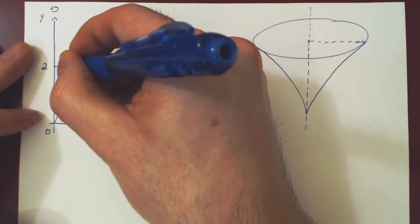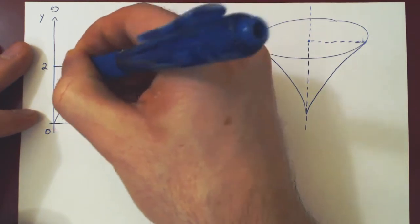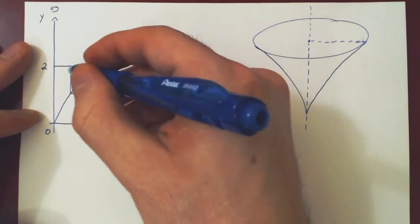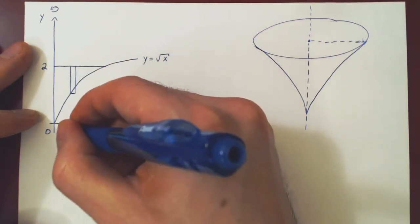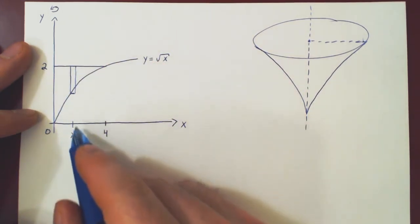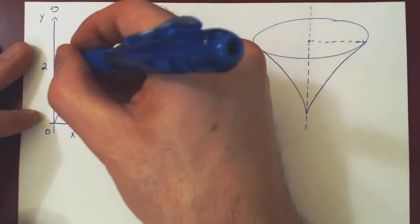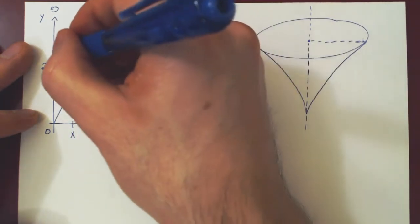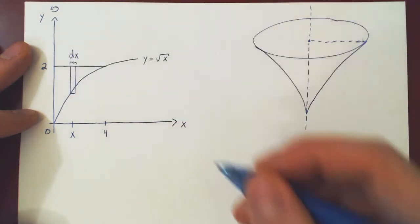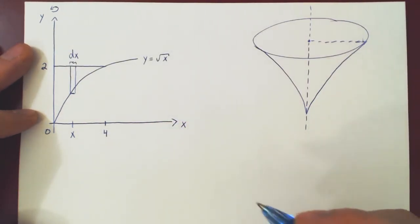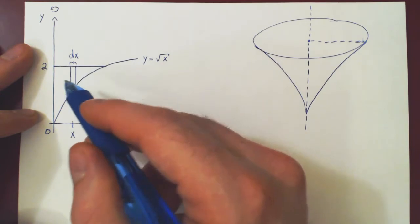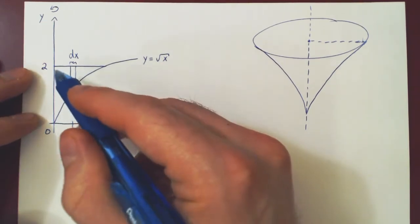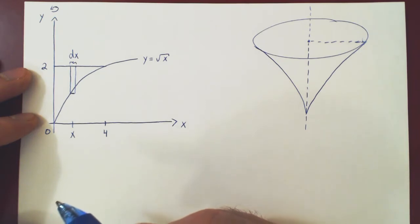We take a small infinitesimal vertical rectangle positioned along the x-axis. The width of the rectangle is a small change along the x-axis — we denote an infinitesimal change in x by dx. Notice the key difference: a vertical rectangle is now parallel to the axis of revolution.